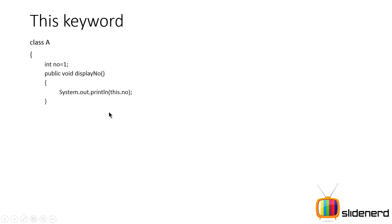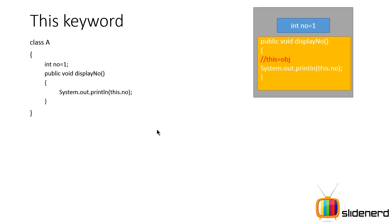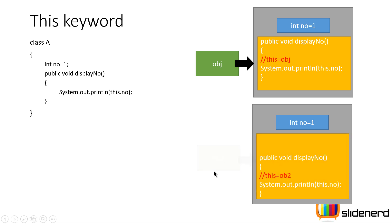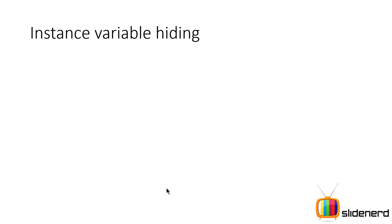That's exactly what the 'this' keyword is about. In class A, inside 'public void displayNumber', I write 'this.number'. The 'this' keyword takes the value of the object currently calling the method. When obj calls displayNumber, 'this' equals obj, so 'this.number' is 'obj.number'. When ob2 calls it, 'this' equals ob2. Whichever object is currently calling the method, 'this' is equal to that particular object.